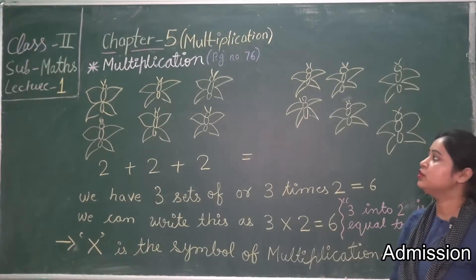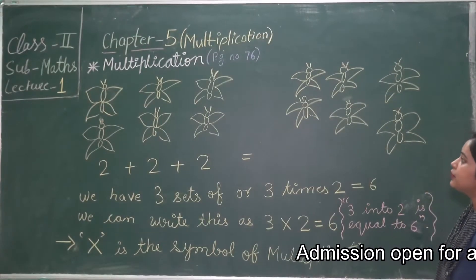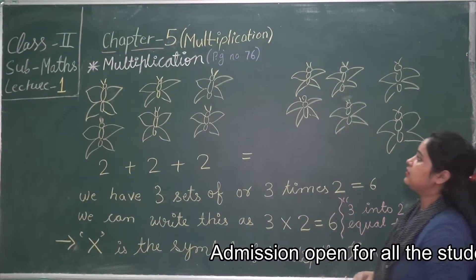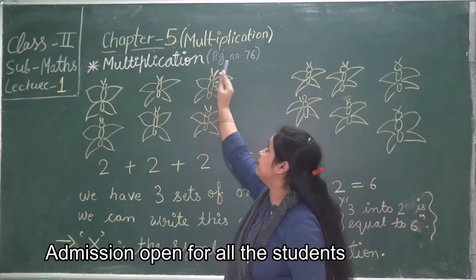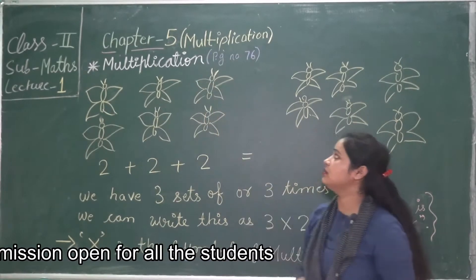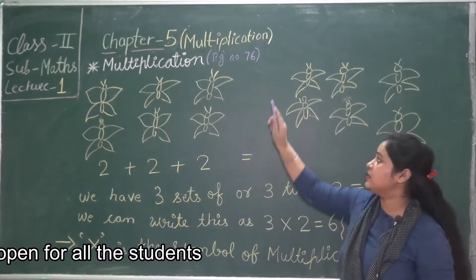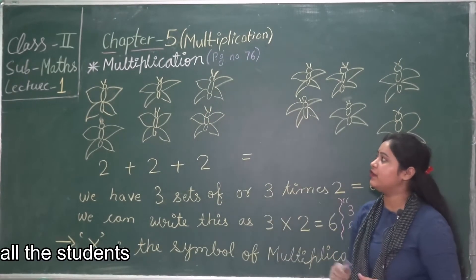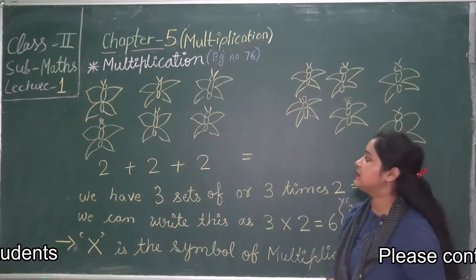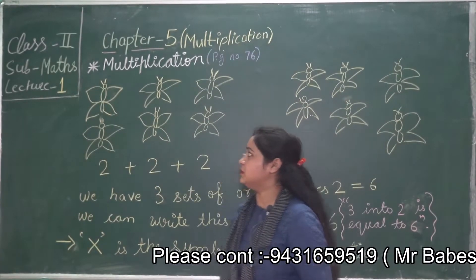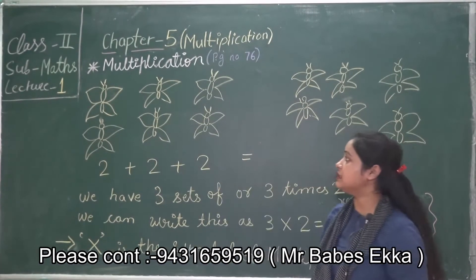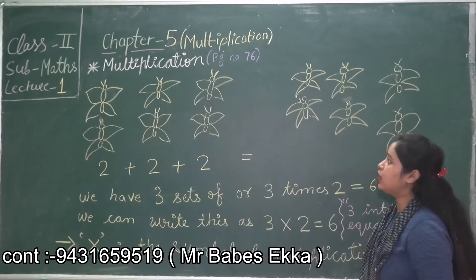Hello everyone, today we are going to start a new chapter — Chapter 5: Multiplication, on page number 76 in your book. This is our lecture number one for this chapter.